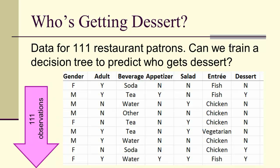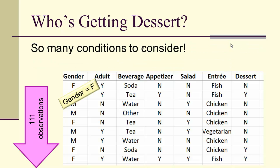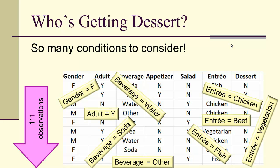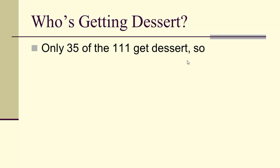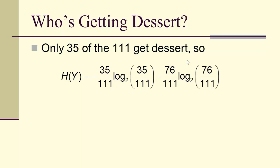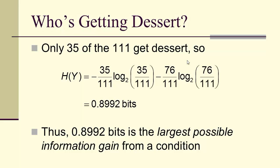Let's look at an example: who's getting dessert? We have data for 111 restaurant patrons, and we're going to ask whether we can train a decision tree to predict who gets dessert. There are many things to consider: whether they're adults, what their appetizer was, whether they're vegetarians, beef, tea, and so on. In the data, only 35 of the 111 get dessert. So true for y is 35 and false is 76, and the entropy for y is 0.8992 bits — the largest possible information gain from a condition.